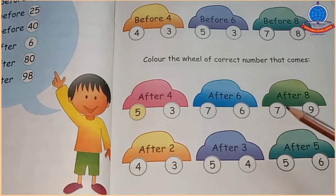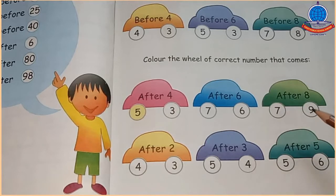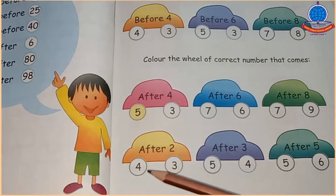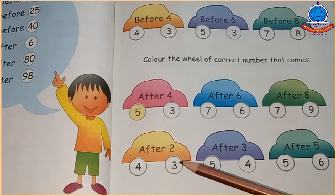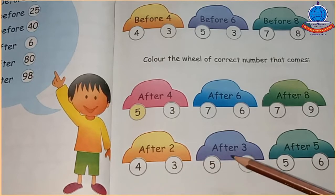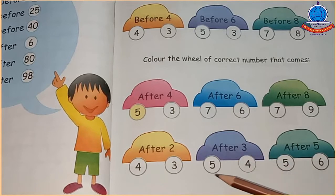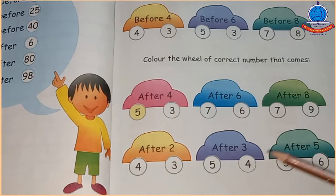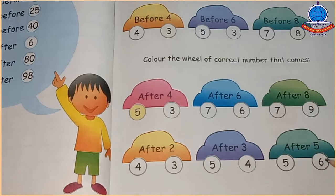After 8 — 8 के बाद 7 या 9? 9 आता है, 9 के circle में color करेंगे। After 2 — 2 کے بعد 4 یا 3؟ 3 آتا ہے، 3 کے circle میں color کریں گے۔ After 3 — 3 کے بعد 5 یا 4؟ 4 آتا ہے، 4 کے circle میں color کریں گے۔ After 5 — 5 کے بعد 5 یا 6؟ 6 آتا ہے، 6 کے circle میں color کریں گے۔